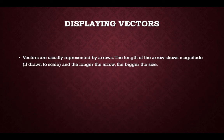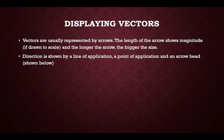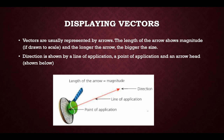Displaying vectors: vectors are usually represented by arrows. The length of the arrow shows the magnitude if drawn to scale — the longer the arrow, the bigger the size. Direction is shown by the line of application, point of application and the arrow head, as shown below.